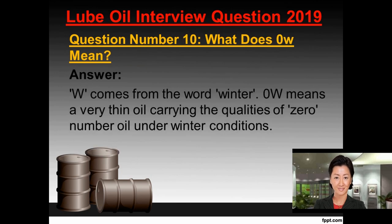Question number ten: What does zero W mean? Answer. W comes from the word winter. Zero W means a very thin oil carrying the qualities of zero number oil under winter conditions.